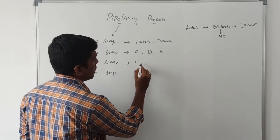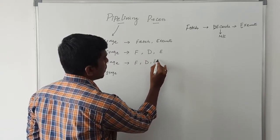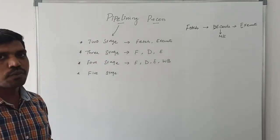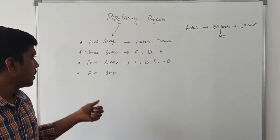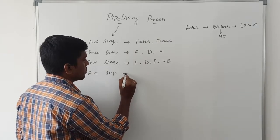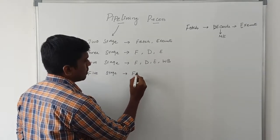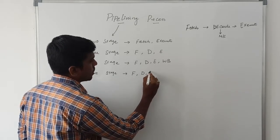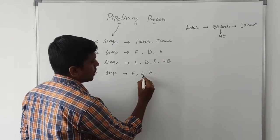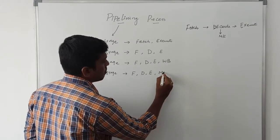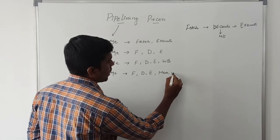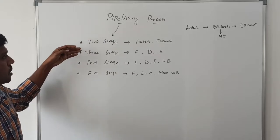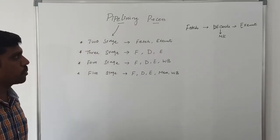In four-stage pipelining the stages are: fetch, decode, execute, and write back (WB). In five-stage pipelining, the five stages are: fetch, decode, execute, memory access, and write back. These are the stages of two-stage, three-stage, four-stage, and five-stage pipelining processes.